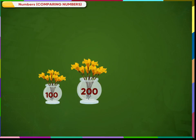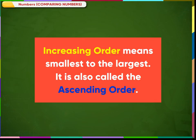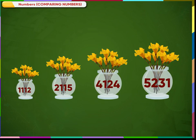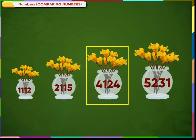Ascending and descending orders. These are three flower pots with numbers written on them. We will arrange these in increasing order. Remember, increasing order means smallest to the largest — it is also called ascending order. We can arrange these flower pots in increasing order of the numbers written on them. So, the pot with number 1112 comes first, then 2115, then 4124.